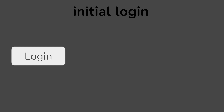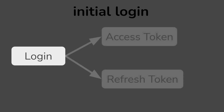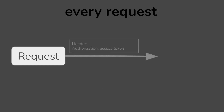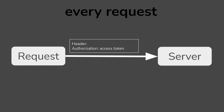Before we get started, we have to understand the concept between refresh tokens and access tokens. When a user first logs in, they get a refresh token and an access token. For every request the user makes, the user passes an access token inside of an HTTP header. The server then uses this access token to identify who the user is.